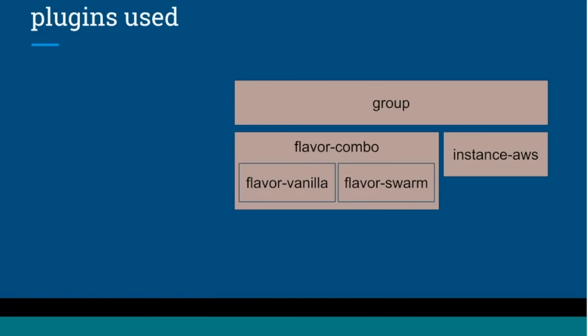The plugins I'm going to use: the default group plugin, the AWS instance plugin, and two different flavors — a third flavor to compose those together. I'm going to use the vanilla plugin to inject some shellcode and the swarm plugin to configure and run the nodes as swarm nodes in a cluster.